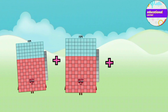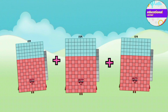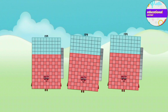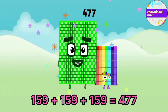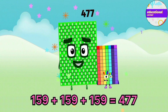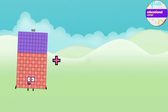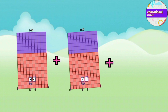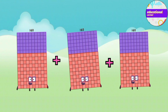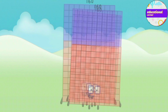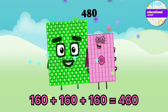159 plus 159 plus 159 equals 477. 160 plus 160 plus 160 equals 480.